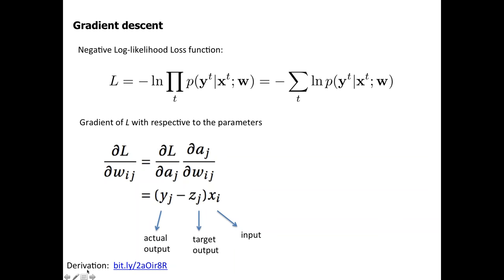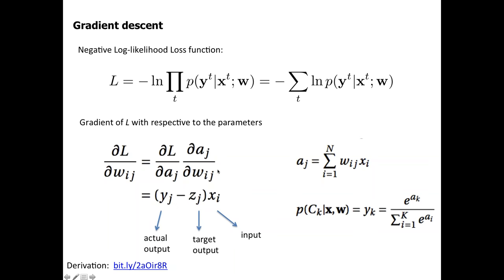The full derivations are available in the document. After derivation, the learning rule is very simple: it's the difference between the model's actual output and the target output, times the input. This is the connection weight from the i-th input to the j-th class — you adjust it proportionally to this gradient. This uses the chain rule: the linear part gives you Xi, and the derivative with respect to Aj gives you that part.